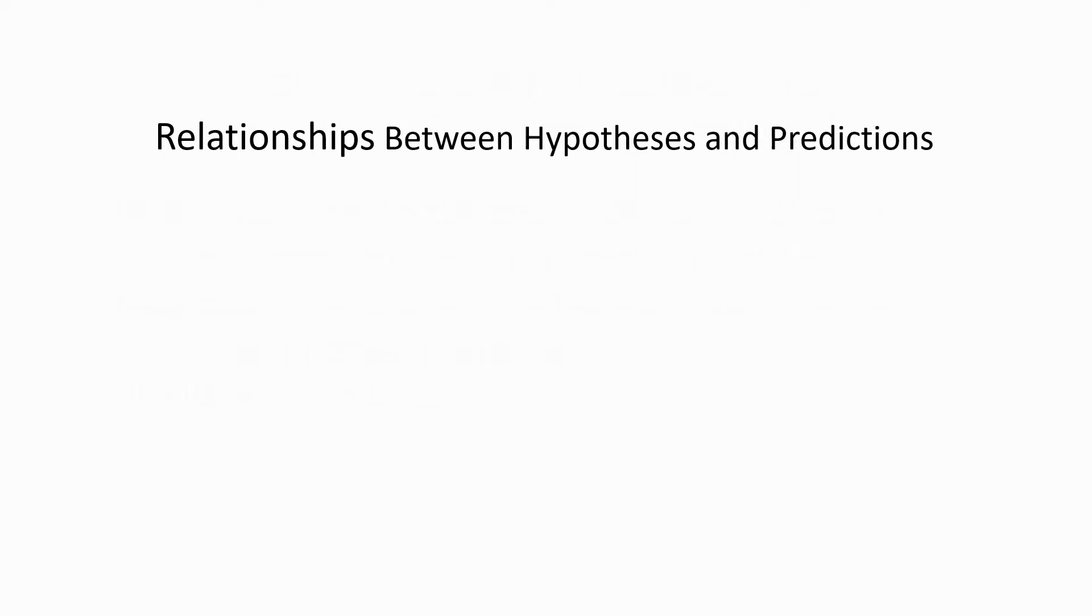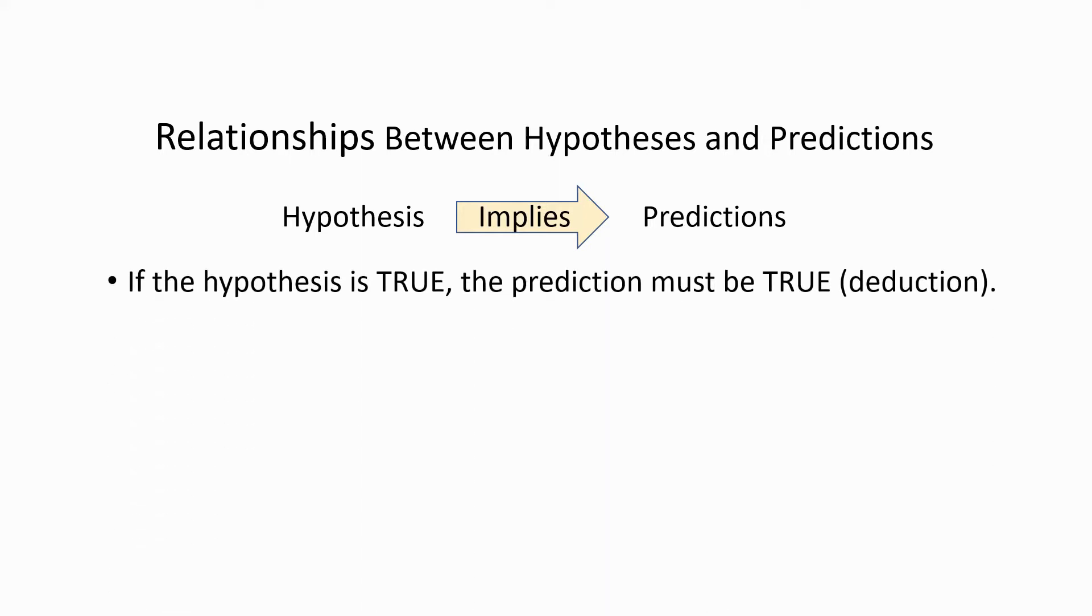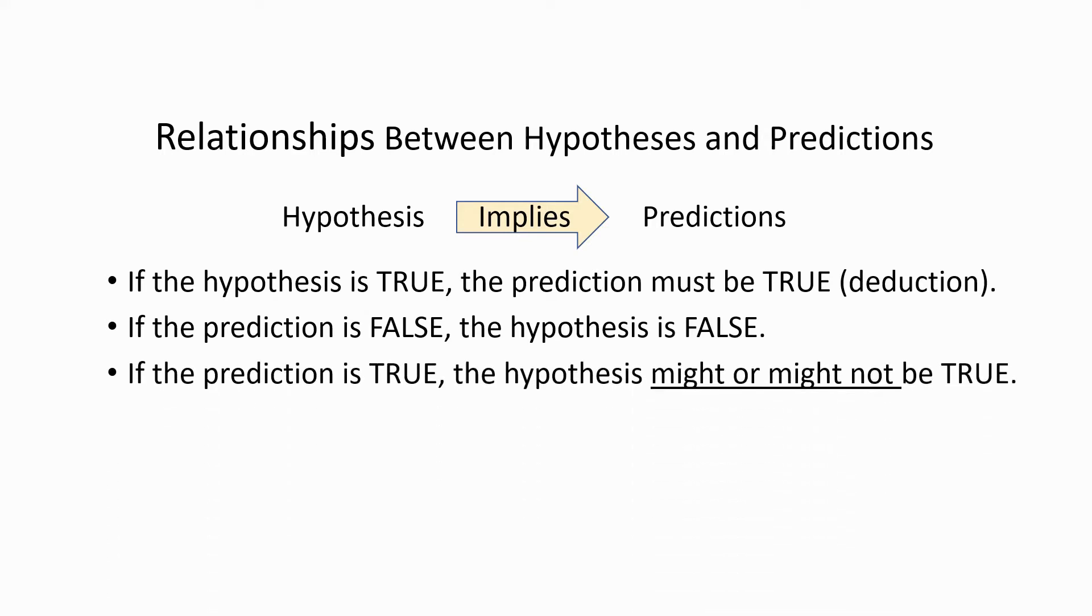These ideas are of course related. We say that a hypothesis makes or implies predictions, which is the same thing. And for our purposes, what that means is, if the hypothesis is true, a prediction that it makes must be true. And this is the relationship of logical deduction. If the prediction is false, the hypothesis is false. Now here's where things get tricky because if the prediction is true, the hypothesis might or might not be true. And we'll look at several reasons why this is the case.